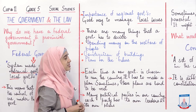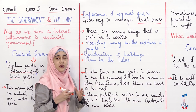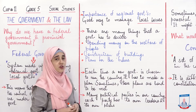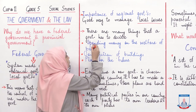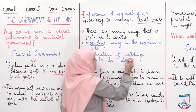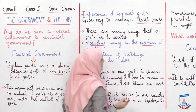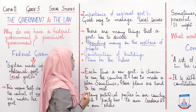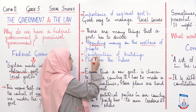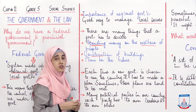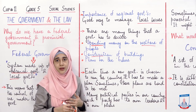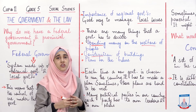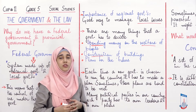There are many things that a government has to decide. Humari jo ek main government hoti hai, usko bohot si cheezein decide karni hoti hai. Jaise ki spending money on the welfare of people - unhe apne logon per kitna paisa lagana hai, unki bhalai ke liye kitna paisa budget mein alag karna hai. Phir construction of buildings - hospitals ki buildings, schools aur offices ki buildings, roads, bridges, aur bohot se construction ke kaam hote hain jo humari government ko dekhne hote hain.